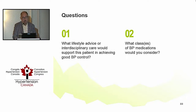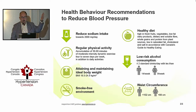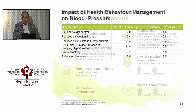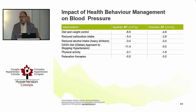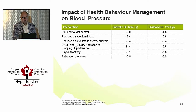Hypertension Canada's recommendations for health behaviors include: sodium reduction, physical activity, attaining good body weight, a healthy DASH-type diet, low-risk alcohol consumption, and reduced waist circumference. What's important to note is that they're all effective in reducing blood pressure to the same extent as a standard dose of monotherapy — all in the range of 5 to 10 mmHg reduction. Never forget about the utility of lifestyle therapies.